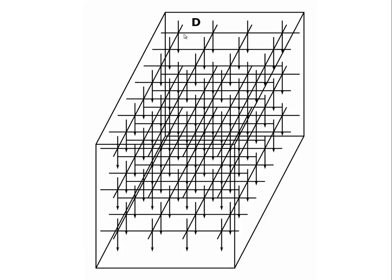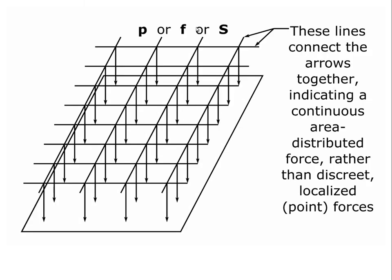Finally, we can have a volume distributed force. Gravity acts on objects and that force is distributed through the object. This becomes complex to depict with arrows, but the continuous lines convey a smooth, continuous distributed force. We use uppercase D, which comes from density, to represent a volume distributed force. This is expressed in pounds per cubic foot, pounds per cubic inch, or kilopounds per cubic foot. Pressure, by comparison, is expressed in pounds per square foot or pounds per square inch.